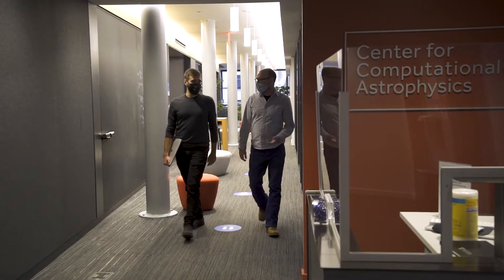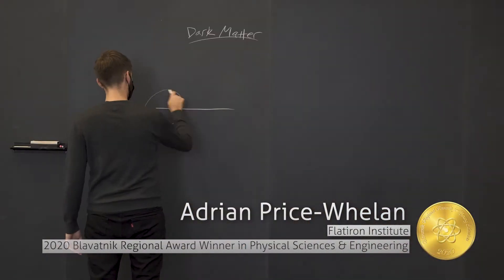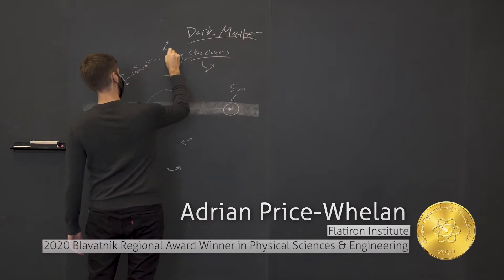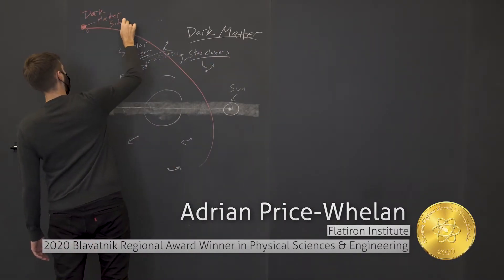My name is Adrian Preissuelan. I'm a Flatiron Research Fellow at the Flatiron Institute, which is a part of the Simons Foundation in New York City. I'm an astrophysicist and I enjoy the challenge of trying to unravel some of the biggest mysteries of the known universe, like what is the true nature of dark matter?